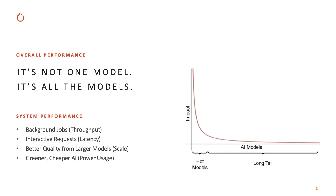When we talk about performance, we're not talking about accuracy or quality measures. We're talking about performance in terms of system performance. This means doing things like throughput and efficiency — how can we do the same using less resources, being greener and producing less carbon emissions?